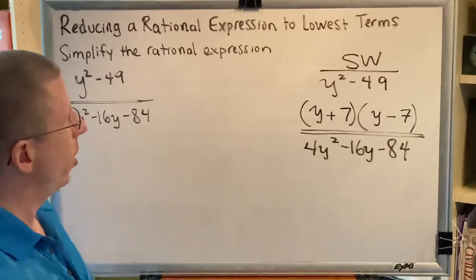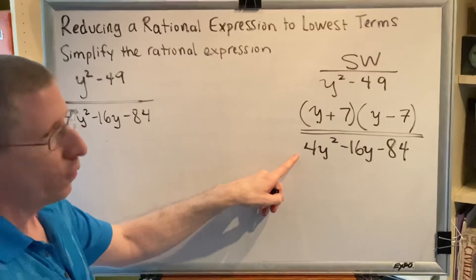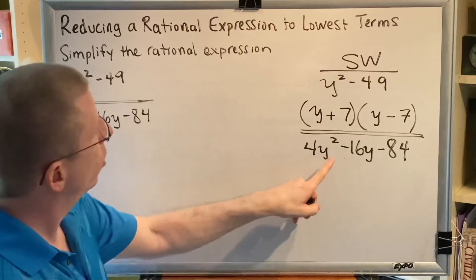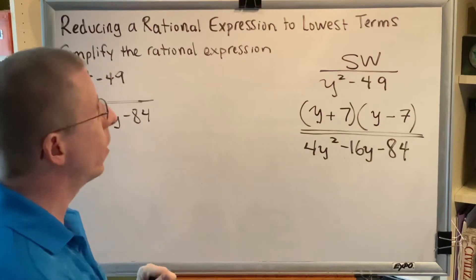So now let's go through the three steps of factoring one more time. First step is descending order. So we've got y to the 2, y to the 1, and no y. Perfect. Already in descending order.